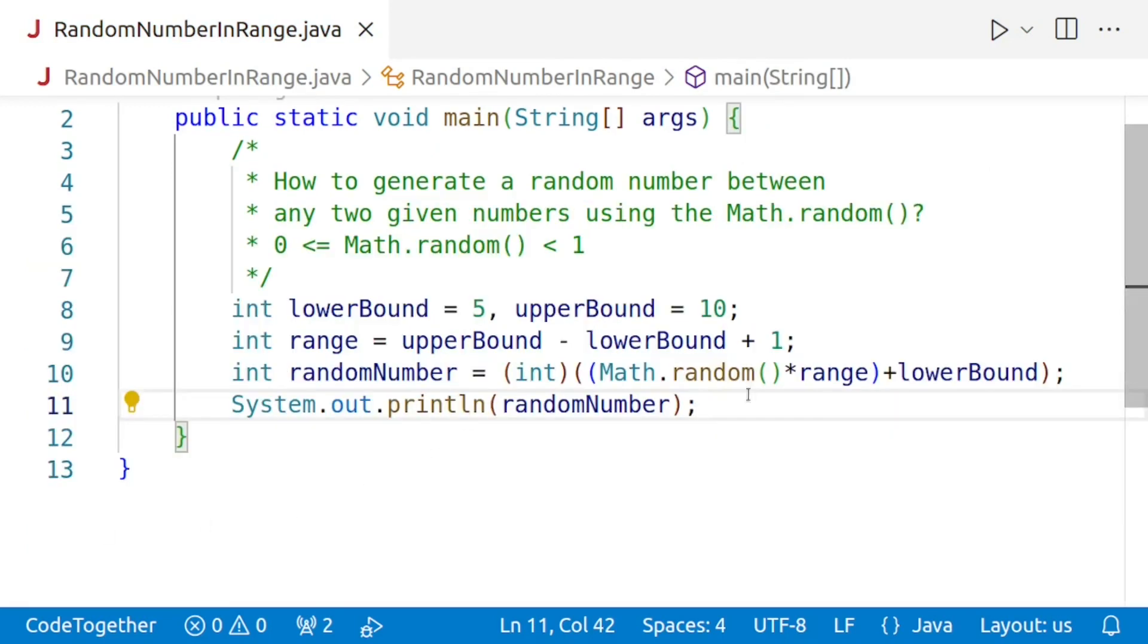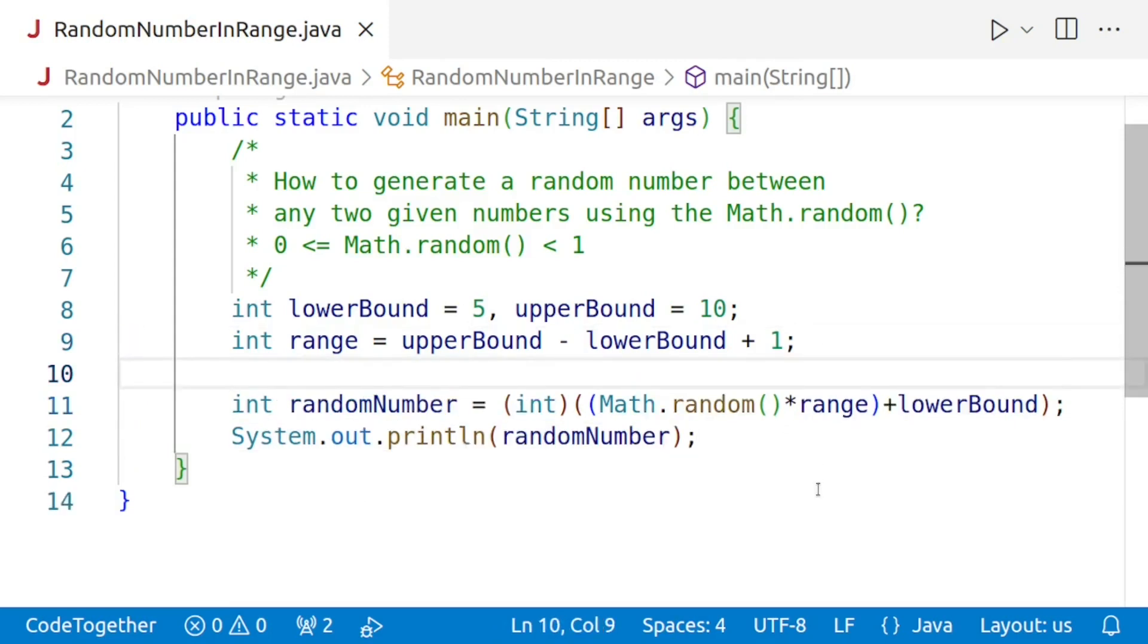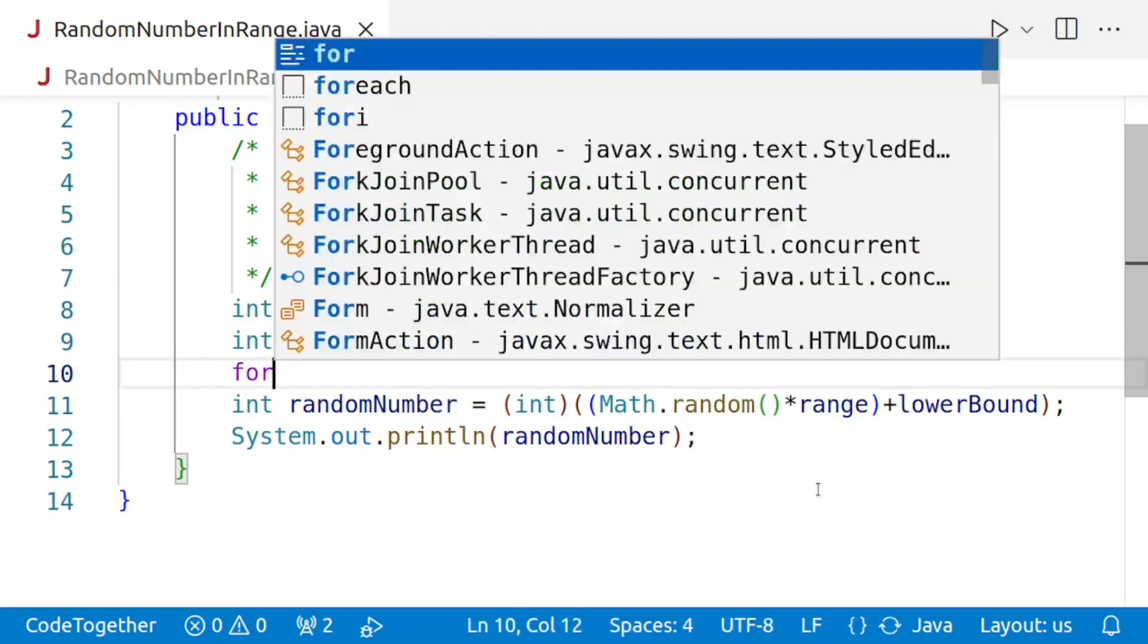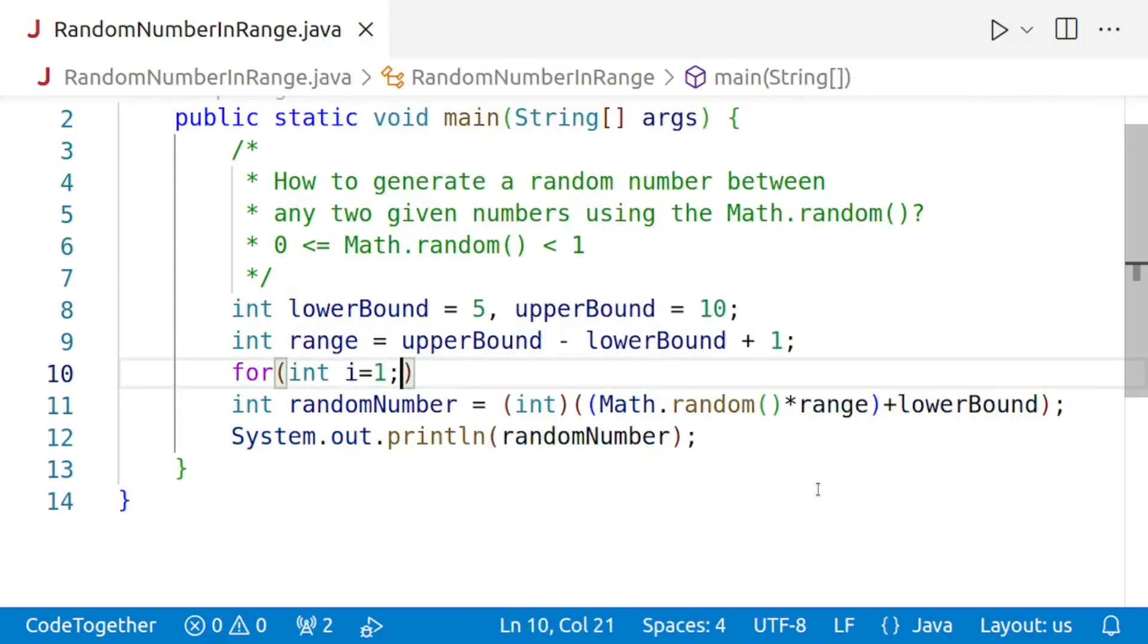Now, we'll modify this program to display multiple values so that we can visually inspect whether or not the program is working in all the cases. For that, I'll take a loop from 1 to 100. I is less than equal to 100, I plus plus. And then, the generation and printing part will go within the loop.